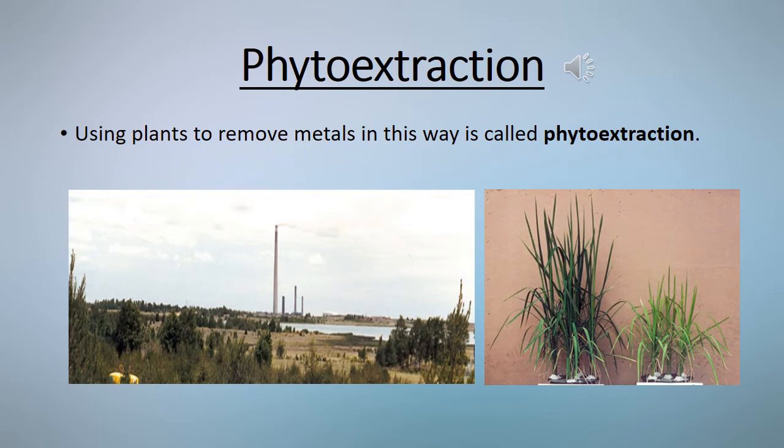Phyto extraction is nice and simple — growing plants that contain metal compounds within them. When you put metals into the plant as it grows, the metal can't go anywhere so it ends up building up from the leaves. When you burn it in a furnace it will turn into ashes, then you can separate the metals from the ashes by displacement or electrolysis.